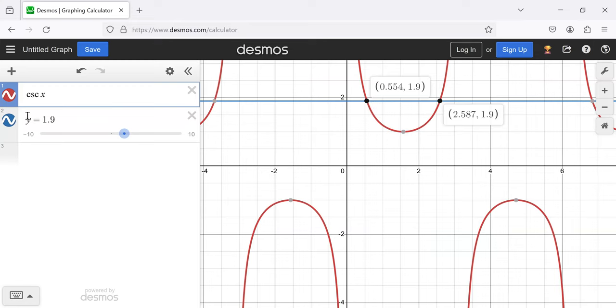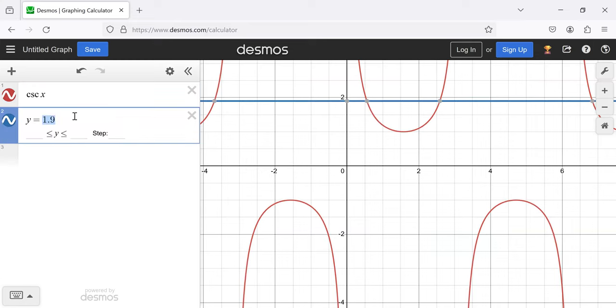And why this horizontal line test works, I mean, look at where I've put this horizontal line. I put it at 1.9. Here's a value where the cosecant equals 1.9. Here's another value where the cosecant equals 1.9. So 0.554, the input, is set to 1.9. And 2.587, the input, is also set to 1.9. And of course, 0.554 is not 2.587. Those are different numbers. So this function is not one-to-one.